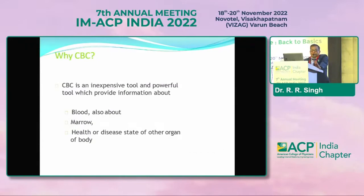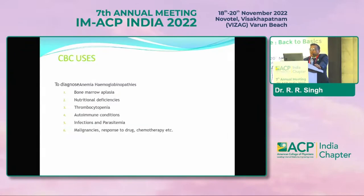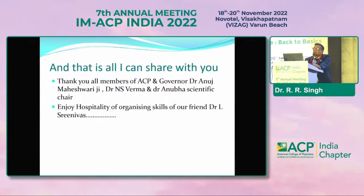In conclusion, CBC is an inexpensive yet powerful tool that provides information about the blood, bone marrow, and health state of the body. It is mainly used to diagnose bone marrow aplasia, nutritional deficiencies, thrombocytopenia, autoimmune conditions, infectious and parasitic conditions, and malignancies. Thank you all, members of ACP.